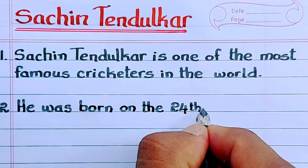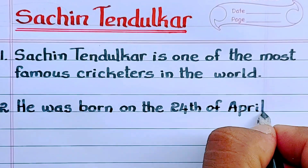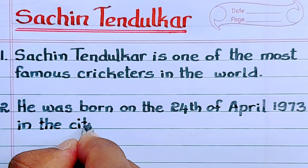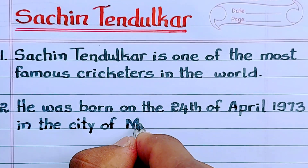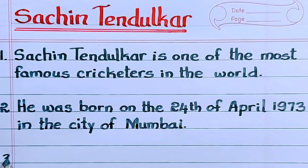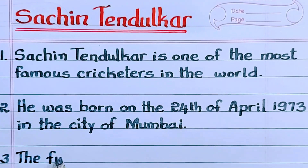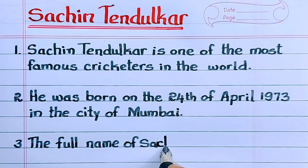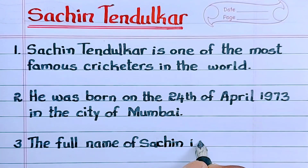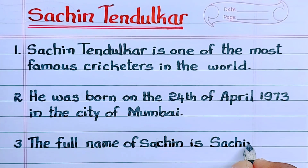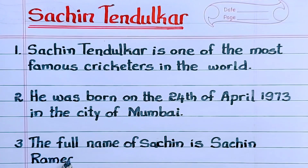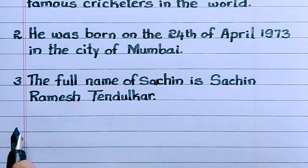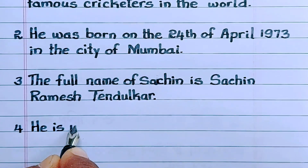He was born on the 24th of April 1973 in the city of Mumbai. Third point: the full name of Sachin is Sachin Ramesh Tendulkar.